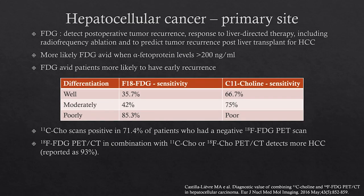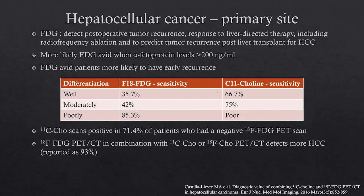For hepatocellular carcinoma, FDG is useful in detecting postoperative tumor recurrence and post-liver transplant recurrence. HCC is more likely to be FDG-avid when alpha-fetoprotein levels are greater than 200, and FDG-avid patients at presentation are more likely to have early recurrence. Comparing FDG to C11-choline: FDG has higher sensitivity for poorly differentiated hepatocellular carcinomas, whereas C11-choline has better sensitivity for well-differentiated to moderately differentiated HCC. C11-choline can detect 71% of HCC in patients who are FDG-negative. When the two are combined, detection can reach up to 93%.